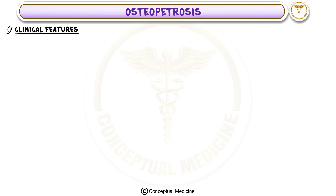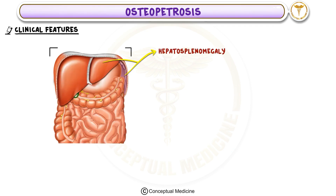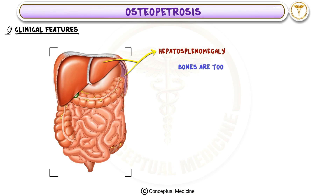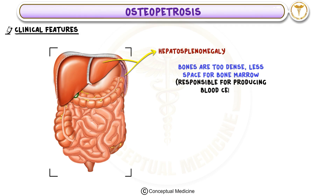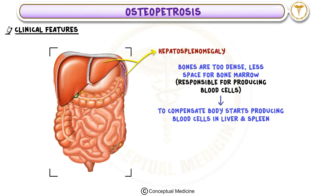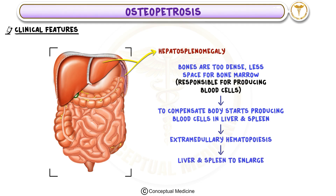Clinical Feature 1: Hepatosplenomegaly. Since the bones are too dense, there is less space for bone marrow, which is responsible for producing blood cells. To compensate, the body starts producing blood cells in other organs like the liver and spleen, a process called extramedullary hematopoiesis. This causes the liver and spleen to enlarge, leading to a condition called hepatosplenomegaly.